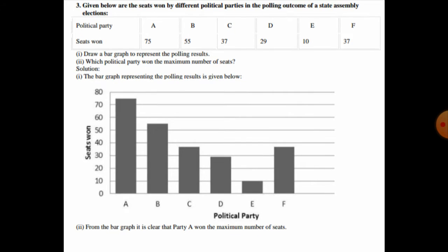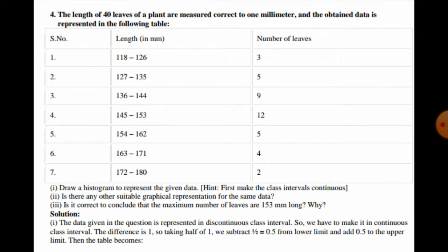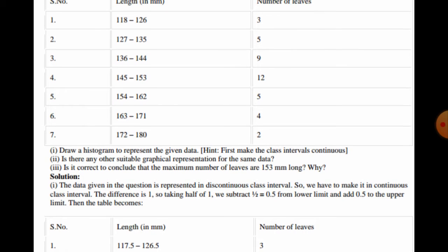Now in question number four and five we have to draw histograms. In question number four, the lengths of 40 leaves of a plant are measured correct to one millimeter. The data is: 118–126: 3 leaves, 127–135: 5, 136–144: 9, 145–153: 12, 154–162: 5, 163–171: 4, and 172–180: 2.